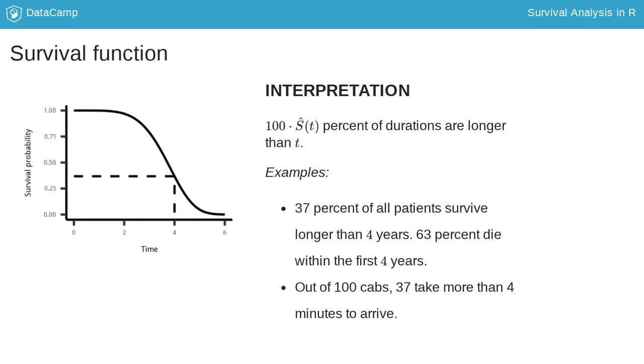The survival curve also gives us the percentage of durations taking longer than t. If we look at t equal to 4, we see that the survival probability is 0.37, in other words 37 percent. For the survival example that means that 37 percent of all patients survive longer than 4 years and 63 percent, that is 100 minus 37, die within the first 4 years. In the cab example we could say that out of 100 cabs, 37 take more than 4 minutes to arrive.